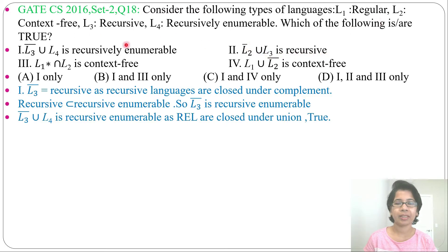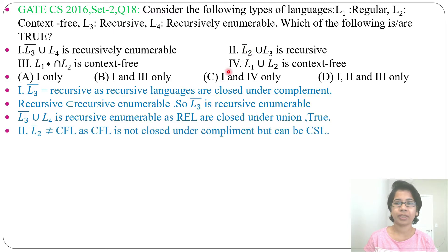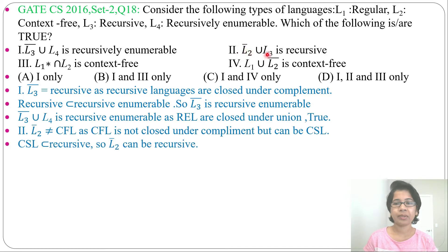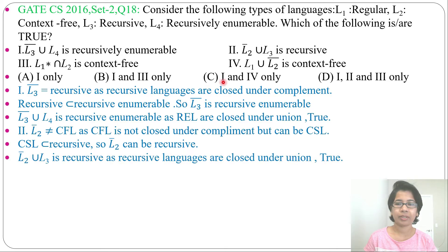Second statement: L2 complement union L3 is recursive. What is L2? L2 is context-free, and context-free complement is not context-free, as context-free is not closed under complement. But it can be context-sensitive, and context-sensitive is a subset of recursive, so L2 complement can be recursive. Now recursive union recursive — L2 complement is recursive and L3 is already recursive — so recursive union recursive will be recursive, as recursive language is closed under union. So this is true.